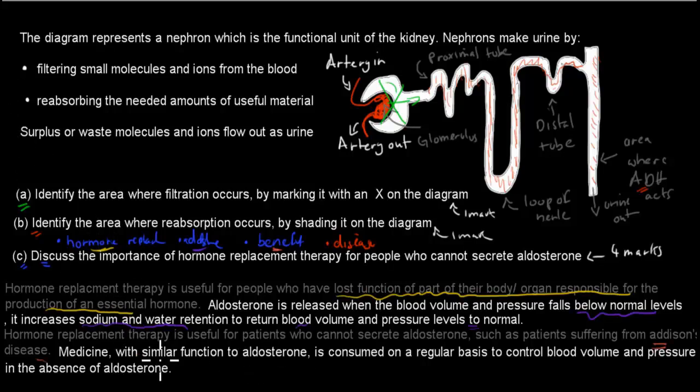And the reason why was because medicine with similar functions to aldosterone, that was the idea of hormone replacement, they get this medicine. So the medicine has a similar function to aldosterone, is consumed on a regular basis to control blood volume and pressure in the absence of aldosterone.